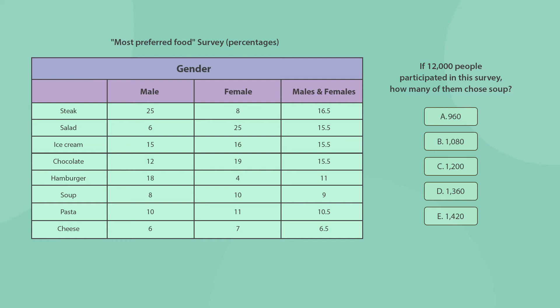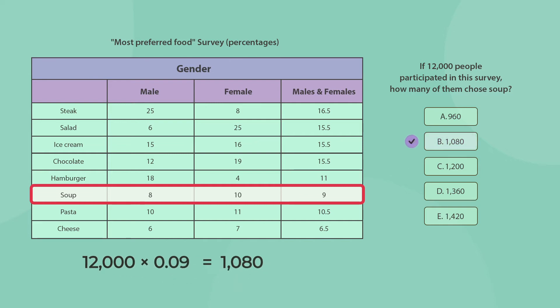To answer the question, we need to understand the chart. You are asked to find the number of people, and not percentages, who chose soup as their preferred food. Thus, the relevant column is the rightmost one. 9% of the survey respondents, male and female, liked soup. Out of 12,000 people, that is 1,080 people. Let's move on to the abstract reasoning section.